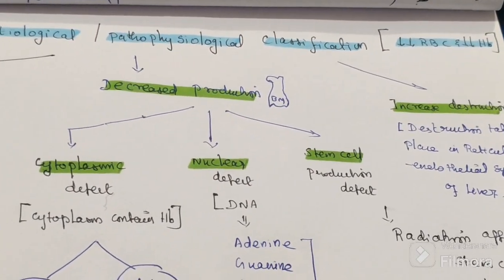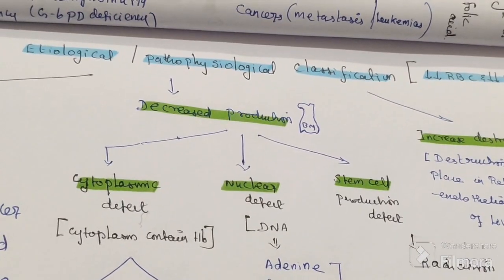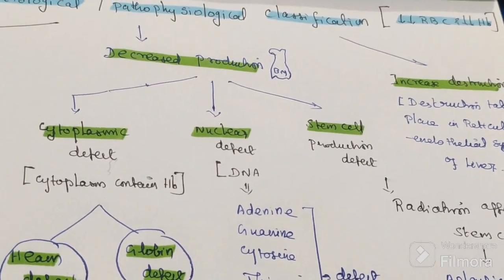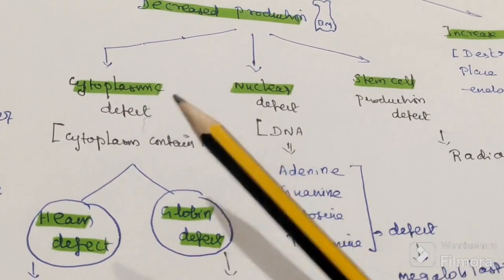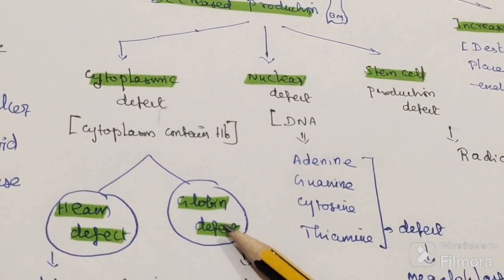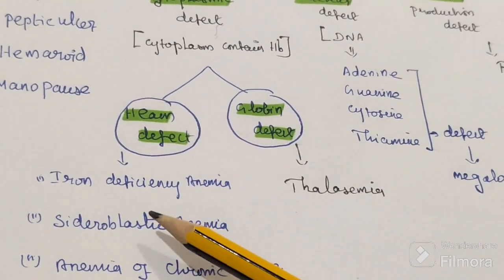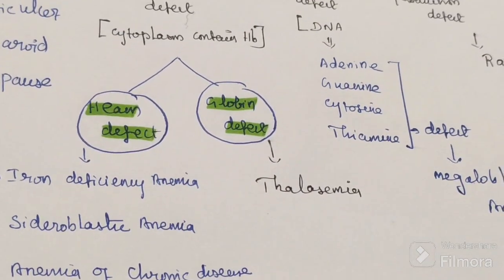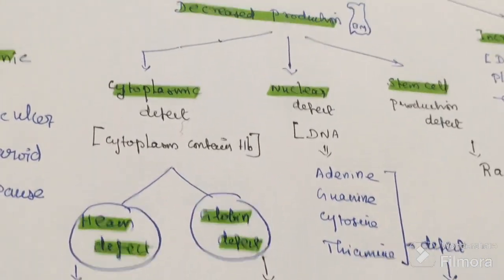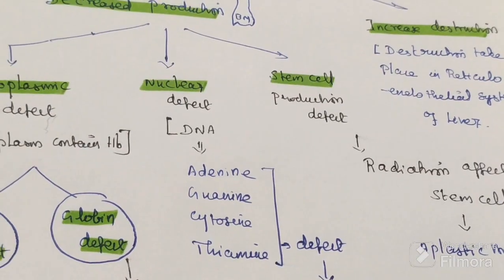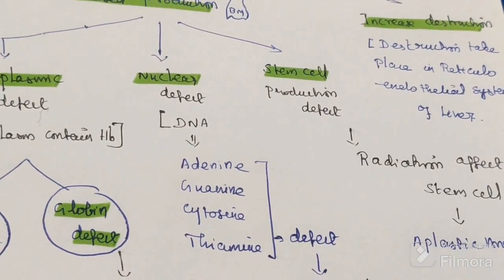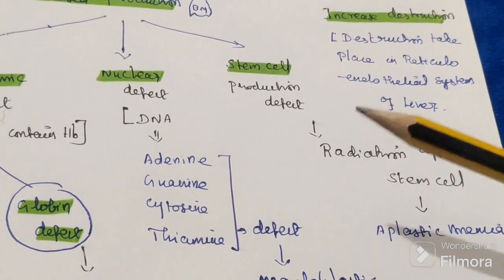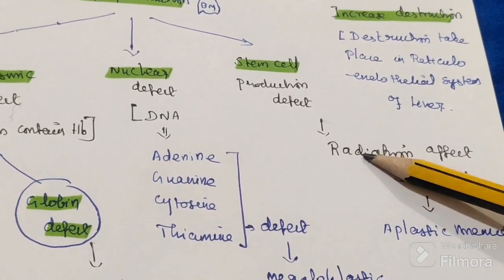Due to decreased production in the bone marrow, hematopoietic cell formation is affected. Because of a cytoplasmic defect — the cytoplasm containing hemoglobin — if heme is affected it causes iron deficiency anemia, sideroblastic anemia, and anemia of chronic disease. If globin is defective it causes thalassemia. A nuclear defect — in DNA containing adenine, guanine, cytosine, and thymine — causes megaloblastic anemia. Stem cell production defects due to radiation cause aplastic anemia.